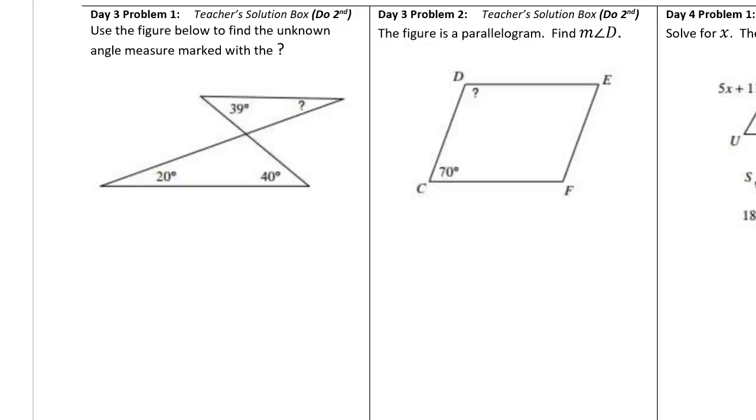Here's the answer for Day 3, Problem 1. Use the figure below to find the unknown angle marked with the question mark. We're looking for how many degrees this acute angle is in the top triangle. We have a few angle measurements to work with.